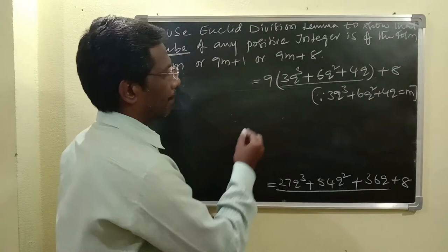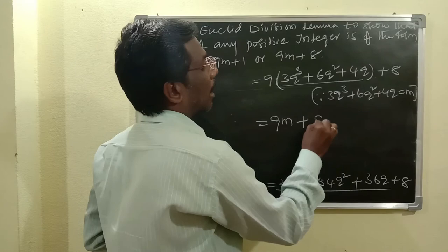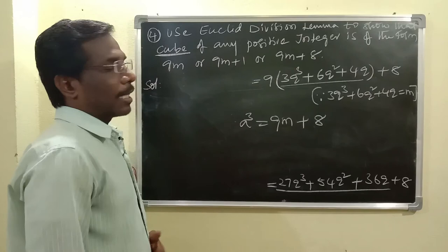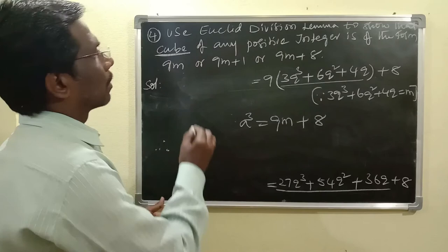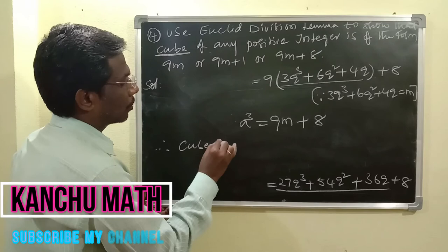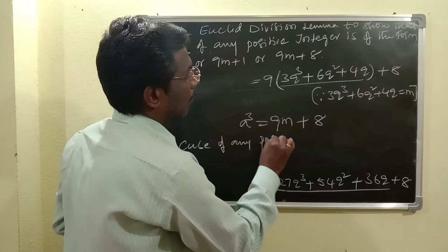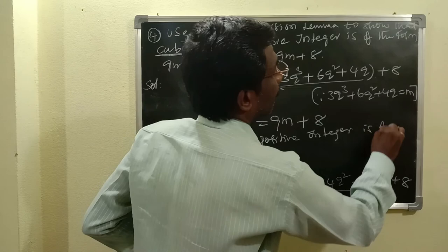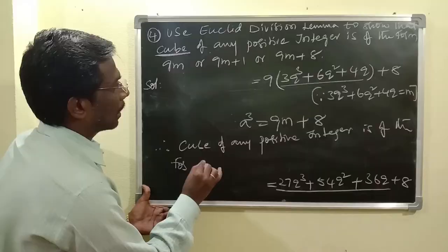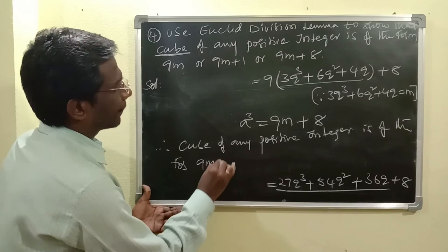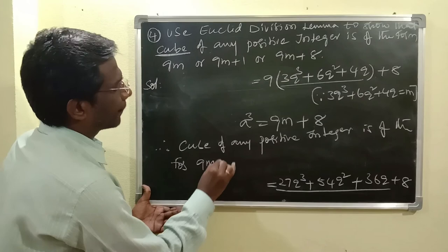Then we can write 9 times M plus 8 as it is. So A cubed equals 9M plus 8. Therefore we can conclude: the cube of any positive integer is of the form 9m, or 9m plus 1, or 9m plus 8.